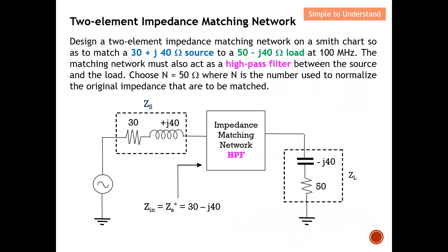This example asks us to design a two-element impedance matching network on the Smith chart, so as to match a 30+j40 ohm source to a 50−j40 ohm load. Since the imaginary part is minus, the load is capacitive; if it were positive, it would be inductive. At 100 MHz, the matching network must act as a high-pass filter. We choose N = 50 as the normalization impedance.